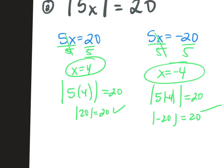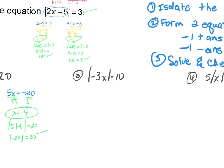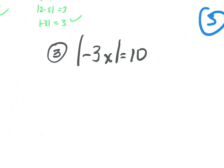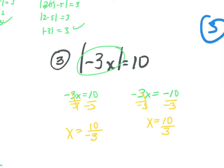Somebody in the last period asked, isn't this just always going to work? No — they will not always work, so we're going to get in the habit of checking and checking. Just because we have a negative inside doesn't mean anything. Is my absolute value by itself? Yes. So negative 3x equals 10, and the other equation is negative 3x equals negative 10. Divide by negative 3: x equals negative 10 thirds. Divide by negative 3: x equals positive 10 thirds.